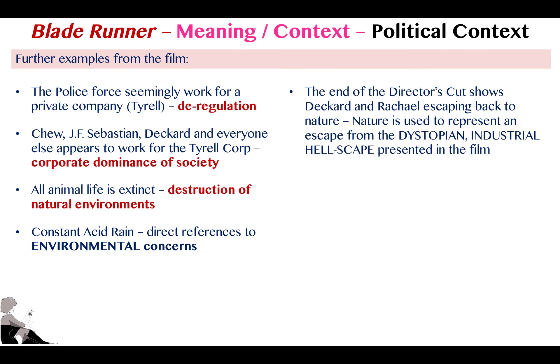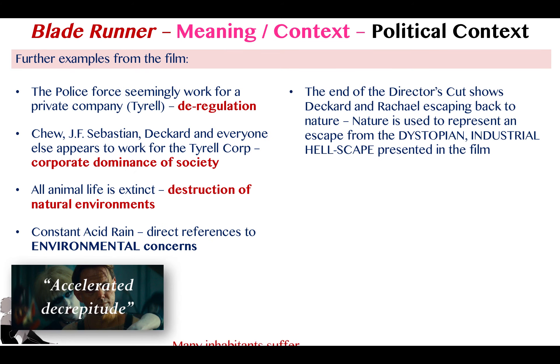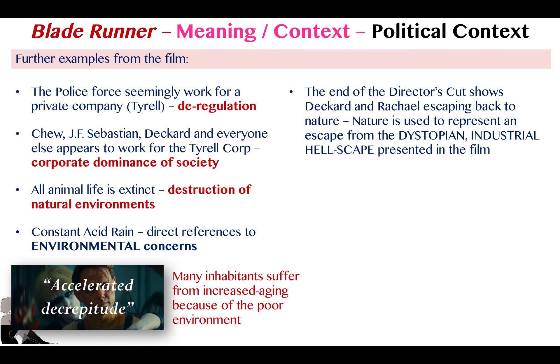Further examples in the film you can draw from include the 'accelerated decrepitude' line — many inhabitants like J.F. Sebastian suffer premature aging because of the poor environment.